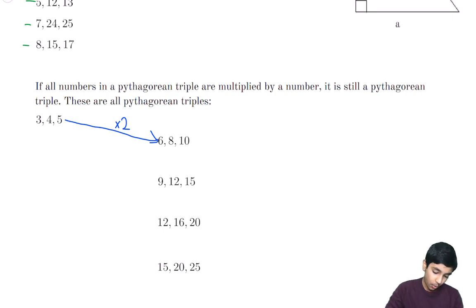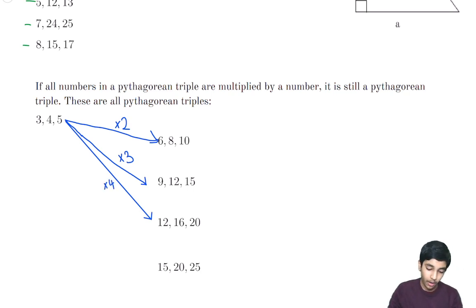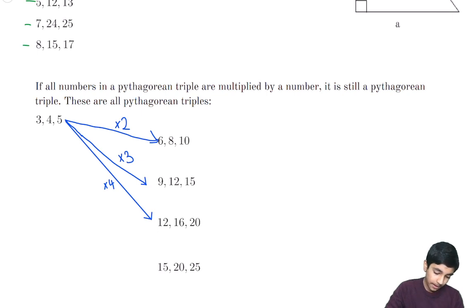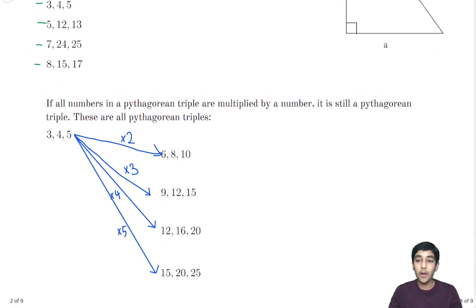We can also multiply by 3 to get the Pythagorean triple 9, 12, 15. Similarly, we can multiply by 4 — so 3 times 4 is 12, 4 times 4 is 16, 5 times 4 is 20 — to get the Pythagorean triple 12, 16, 20. And similarly, multiply by 5 to get the Pythagorean triple 15, 20, 25. This is a very useful fact, because it tells us that with one Pythagorean triple we can generate infinitely many more.